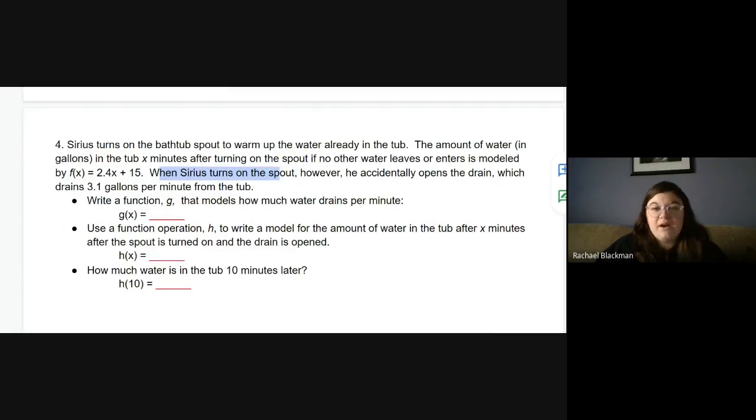When Sirius turns on the spout, however, he accidentally opens the drain, which drains 3.1 gallons per minute from the tub. We're going to figure out how much water is in the tub after 10 minutes, but we're going to need some function operations. We already have one for how much water is going in the tub. Maybe we start off with 15 gallons and then we add 2.4 gallons per minute. Let's find a function, we'll call it G, that models how much water is draining per minute. And you're going to do most of this yourself; I'm just stepping it through.